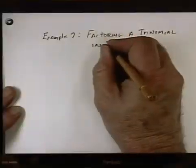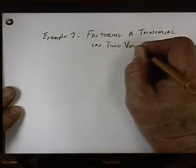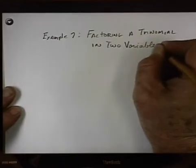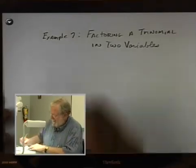We are going to do this the same way as we have been doing. And this is Example 7: Factoring a trinomial in two variables. They call it in two variables, I'd call it with two variables, but they wrote the book, I didn't. So here's our factor.